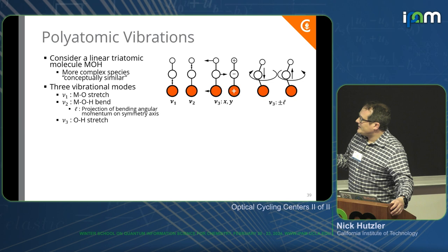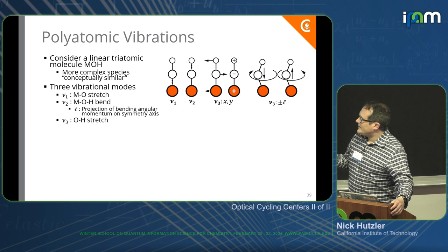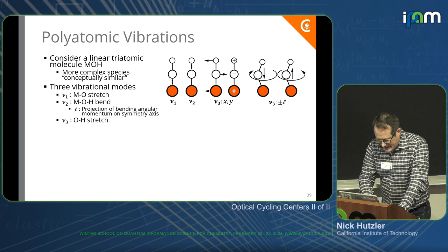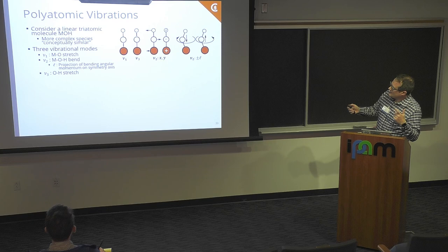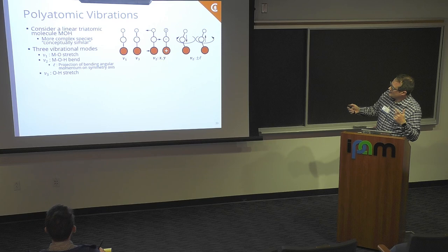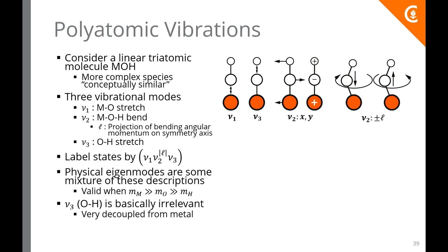There's the MO stretch mode and the OH stretch mode. And then there's a bending mode — I swapped the labels on the slide, so this is nu3 (MO stretch), this is nu1 (OH stretch), and this is nu2 (the bend). So: MO stretch, OH stretch, and then there's a bending mode.